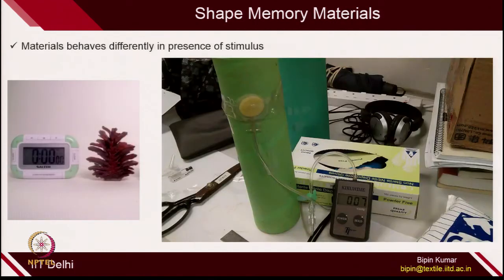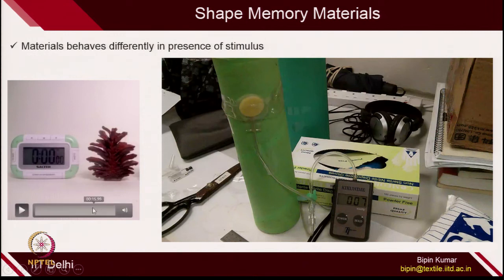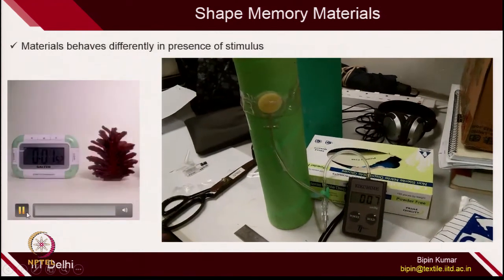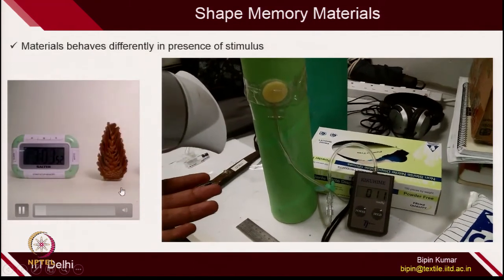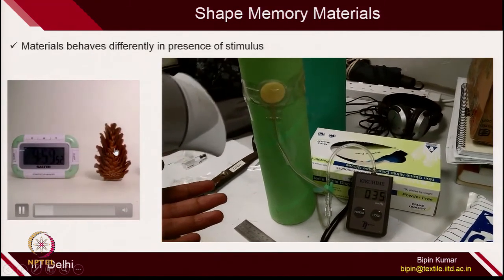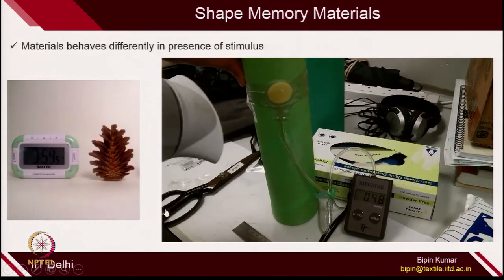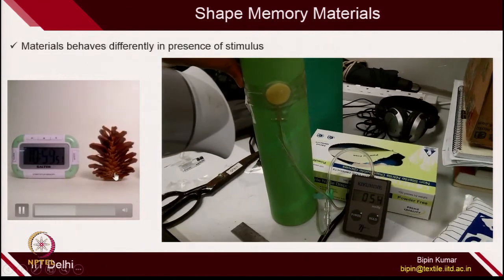What do we mean by those smart materials? One of the materials which is very popular in research is shape memory materials — materials which behave differently in presence of a stimulus. If you see the pine cone, it also has similar properties. In dry state it is actually opened up, but the moment you put moisture, automatically it changes its shape. The same properties of pine cone can be generated with the help of shape memory materials.